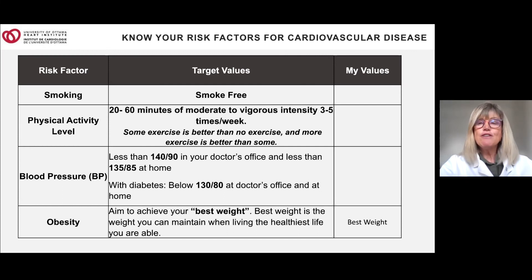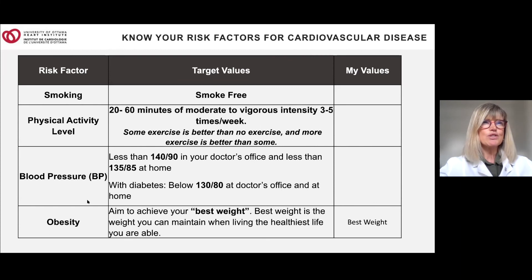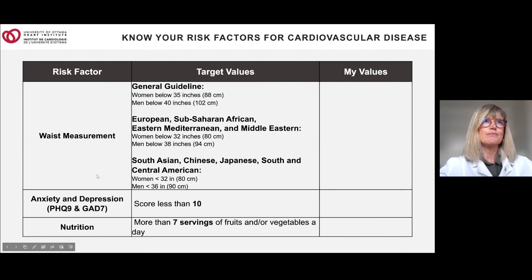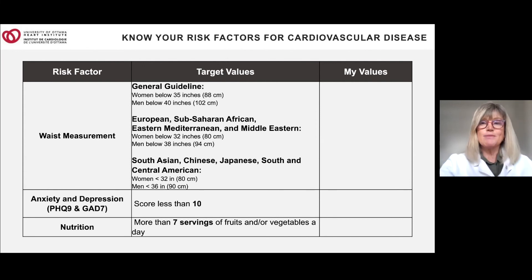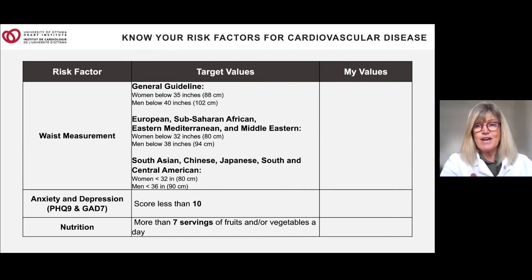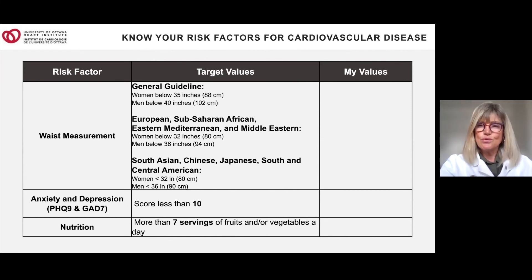For obesity, achieve your best weight — one that allows you to be active and lead a healthy lifestyle. We're trying to move away from the number on the scale. The waist measurement is a quite accurate measure of where you're at. Different ethnicities have different frames, which is why the numbers vary. It's a great tool to see where you stand.